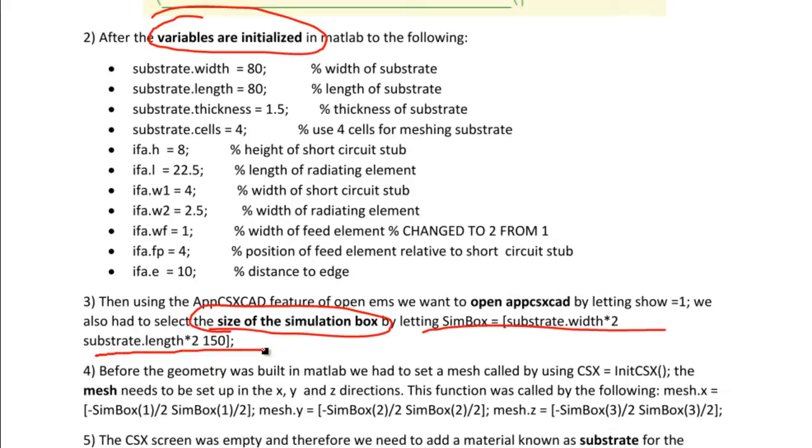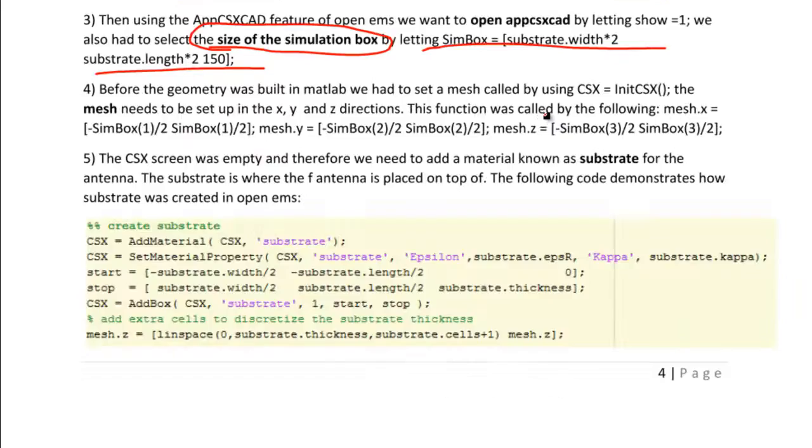After setting up the geometry, before we set up the geometry actually, after we set up the simulation box we have our window open, we have to set up our x, y, and z axis. We have to set up the mesh of how OpenEMS will make the 3D version of our antenna. This is done on point number 4, as you see right here.